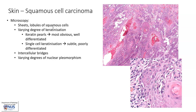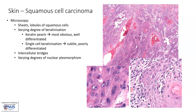Microscopically, squamous cell carcinoma is composed of sheets or lobules of neoplastic squamous cells showing varying degrees of keratinization. Keratin pearls are the most obvious signs of keratinization, and if you see many of them, the tumor is generally well differentiated. We also saw single cell keratinization — if we only see this, the tumor is likely more poorly differentiated. We also saw the intercellular bridges between adjacent cells, which is a feature of squamous differentiation. Intercellular bridges can also be seen in benign squamous epithelium, so they are not specific to squamous cell carcinoma, but rather indicate squamous differentiation.